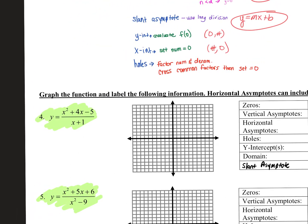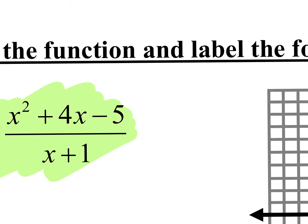So I look at this first one: x squared plus 4x minus 5 divided by x plus 1. How do you find the zeros — how do you find the x-intercepts? Set the numerator equal to zero. What that means is to factor. You're going to see all sorts of factoring — where a is not 1, where you have to take out a GCF, all that good stuff. Anything we've learned before, you need to know how to do. So, can you factor this?